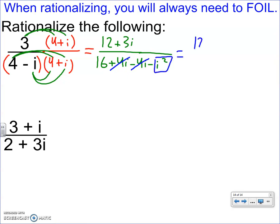So the top is 12 plus 3I. On the bottom, we have 16. Now, when you see minus I squared, that's really minus negative 1, which means you're adding, really. So this turns into 12 plus 3I over 16 plus 1 is 17. Now, there's no more I in the denominator.